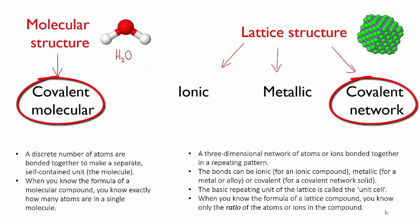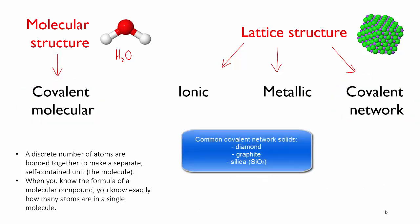However, the three most common covalent network substances that you need to know about are diamond and graphite, which you've already met, and silica or silicon dioxide, SiO2. This is the main component of sand, and it forms a tetrahedral structure much like diamond, except that each silicon atom is separated from the next by an oxygen atom.